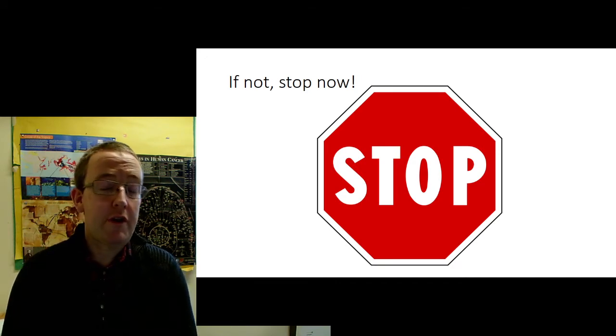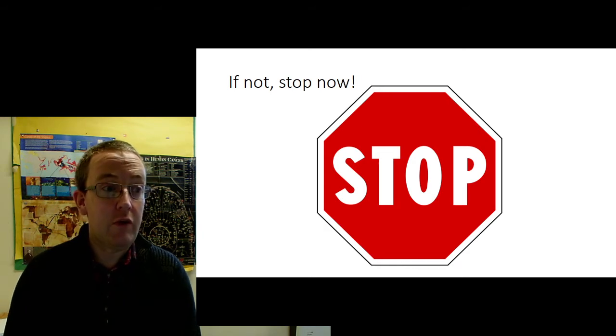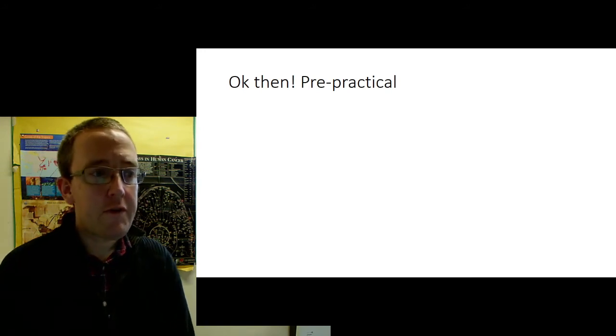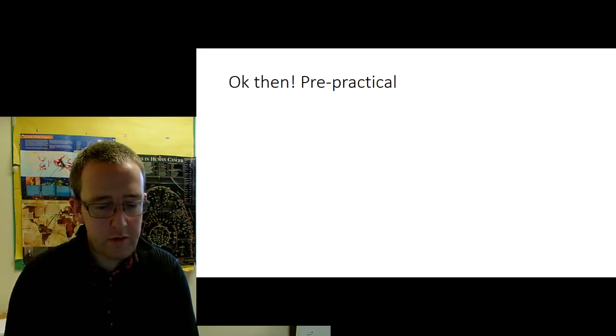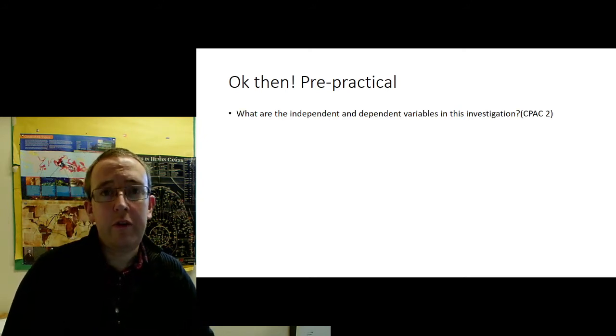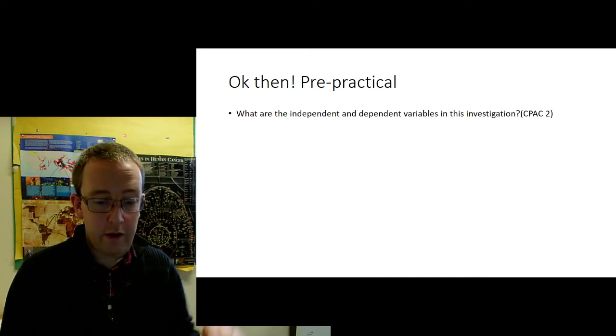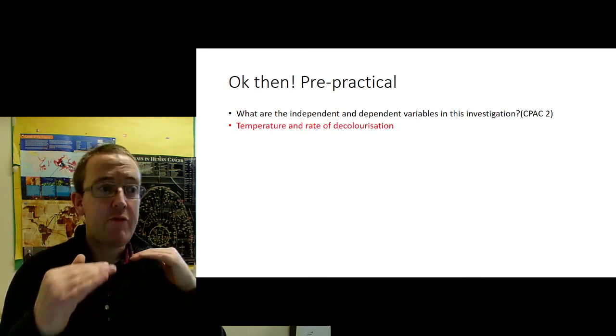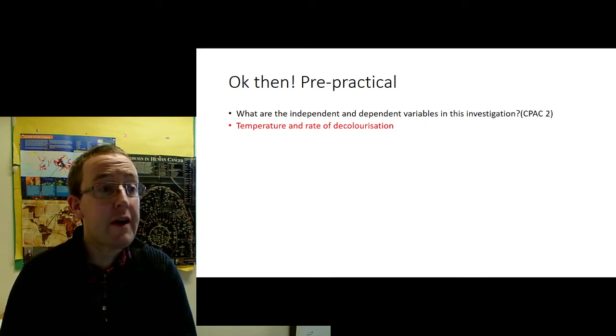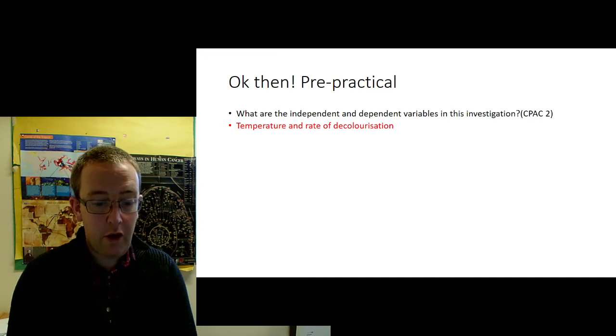Okay, good. So I'm assuming if you are still with us, then you have done all those things and we're going to carry on. So the pre-practical thing, you should have in front of you all of your questions and your answers, either on the Google Doc or another form. So what are the independent and dependent variables? This is part of CPAC2. Well, of course, it's temperature. So we're changing the temperature from 55 to 45, 45 to 55, and the rate of decolorization. Not the time taken for methyl blue to decolorize, but really it's the rate that we're measuring. One over time.